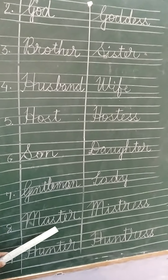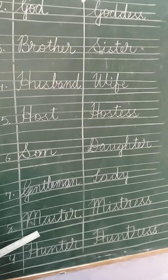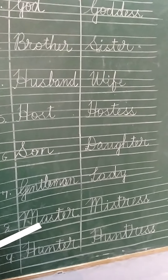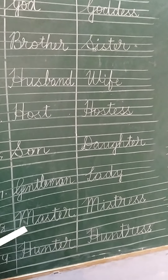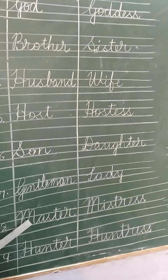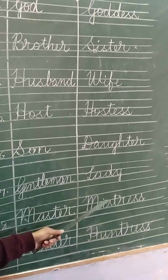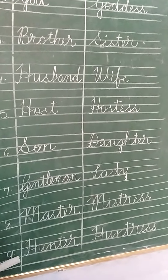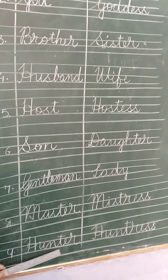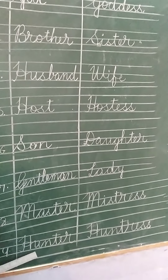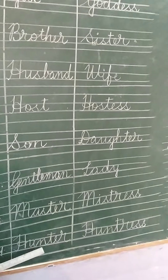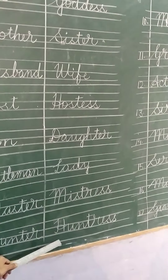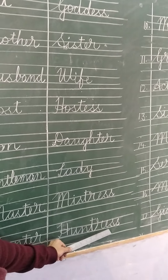Number eight — master. We use master to specify a male person. When you write your father's name, then you write mister or master. Mistress is the girl — M-I-S-T-R-E-S-S — mistress. Hunter — H-U-N-T-E-R — the one who hunts. And the female gender of hunter is huntress — H-U-N-T-R-E-S-S — huntress.